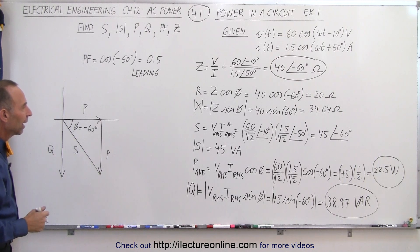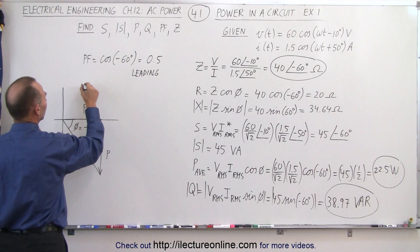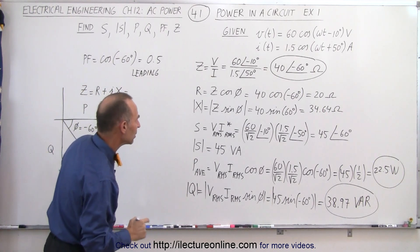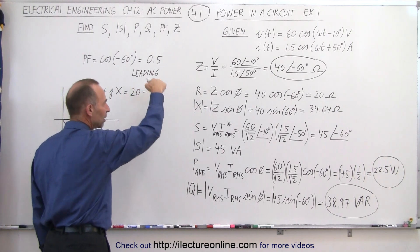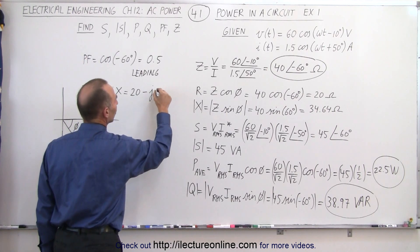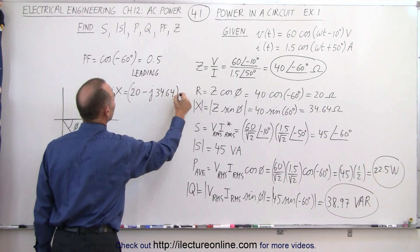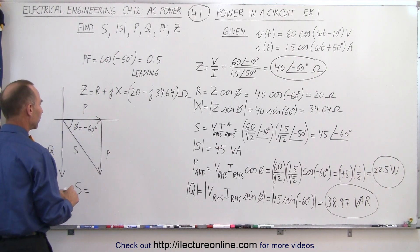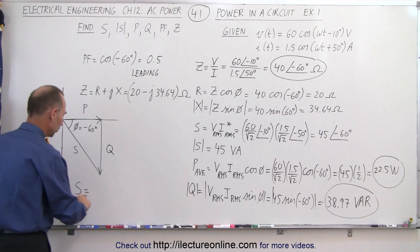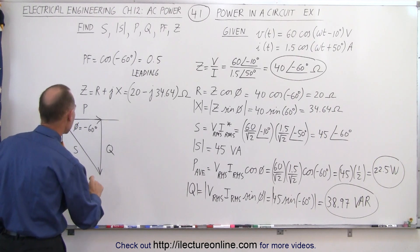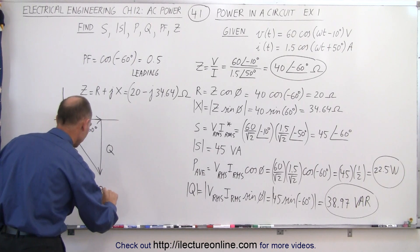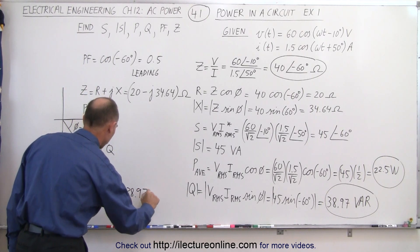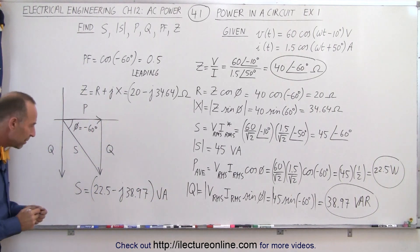Finally, we can write the impedance Z in terms of R plus jX, which equals 20 ohms minus j times 34.64 ohms — the negative sign because the reactance is capacitive. And the complex power S can be expressed in terms of P and Q, so S equals 22.5 minus j times 38.97 volt amperes.